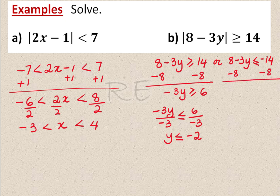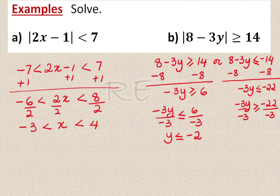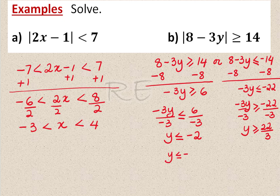In the second case, 8 minus 3y is less than or equal to negative 14. Subtracting 8 from both sides gives negative 3y less than or equal to negative 22. Dividing by negative 3 and reversing the inequality gives y greater than or equal to 22 over 3. The solution set is y less than or equal to negative 2 or y greater than or equal to 22 over 3.